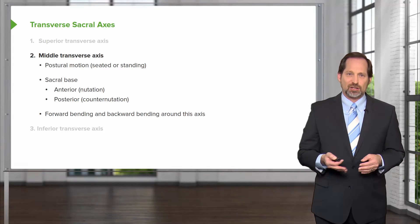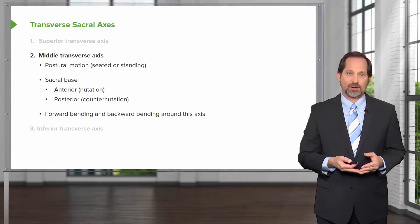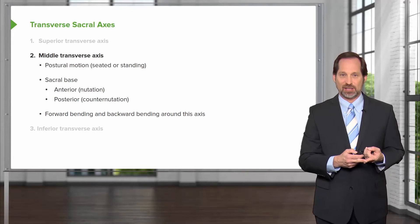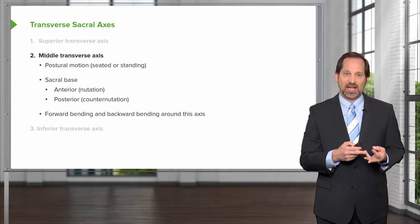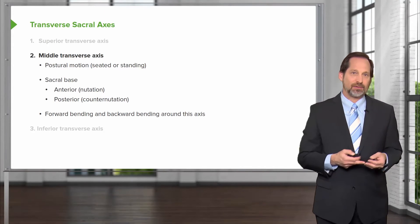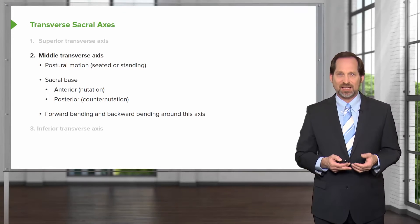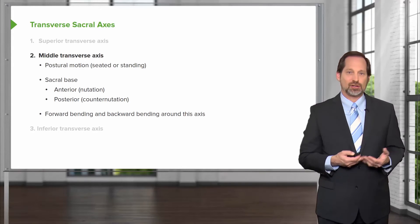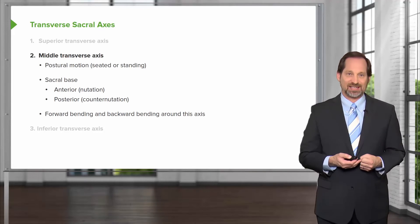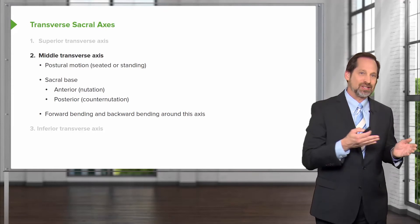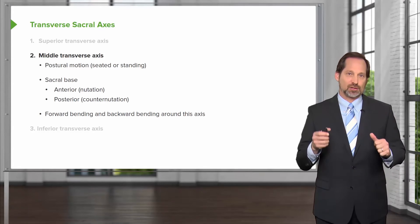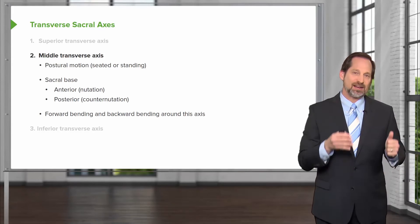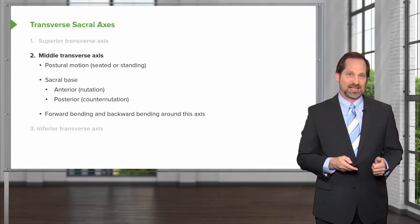When assessing the sacrum, you do the seated flexion test — assessing the depth of the sacral sulcus and looking at the inferior lateral angle. The reason you do the seated flexion test rather than standing is because when standing, the pelvis will help change and compensate the motion. When sitting, you're sitting on the pelvis and take it out of the equation, so the seated flexion test is specifically testing the sacrum.